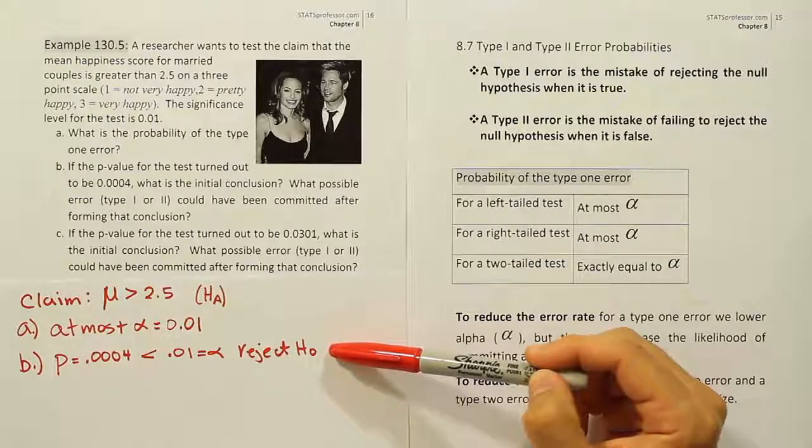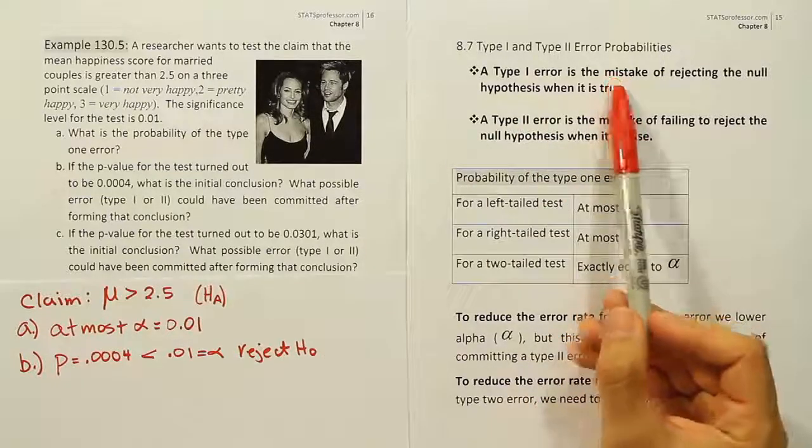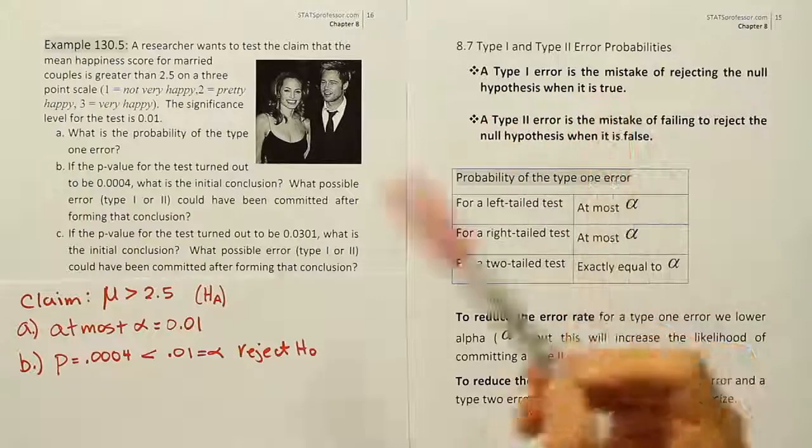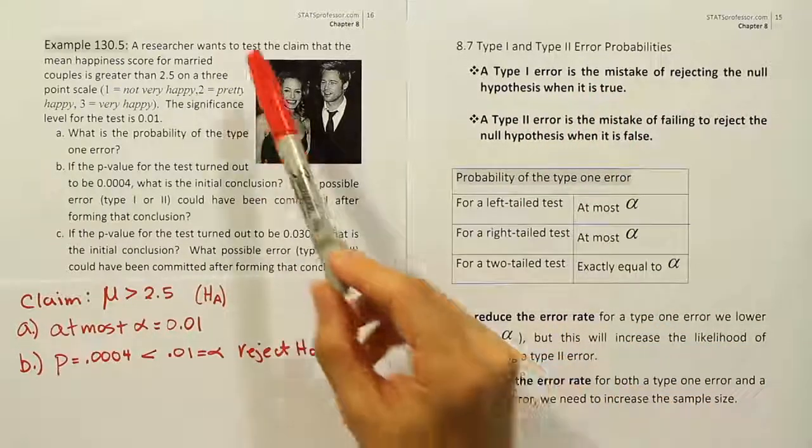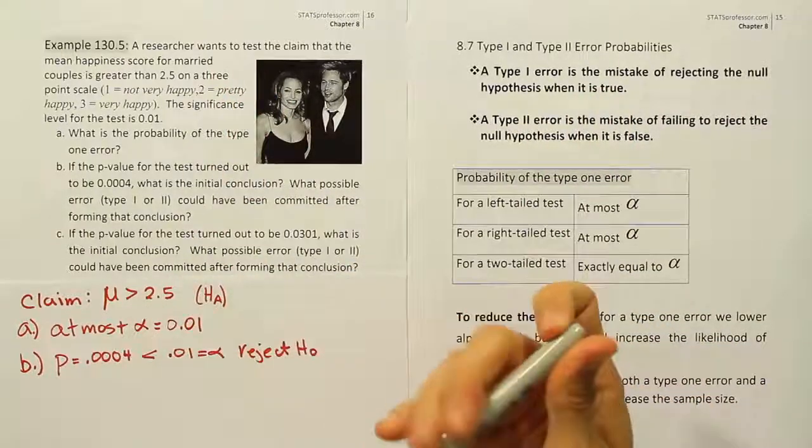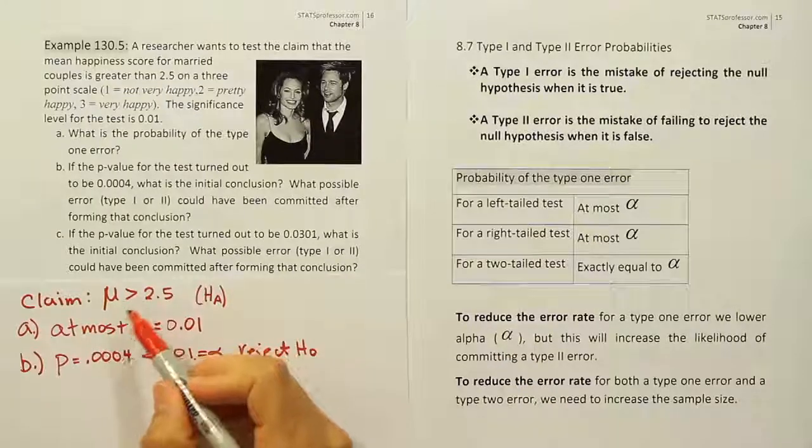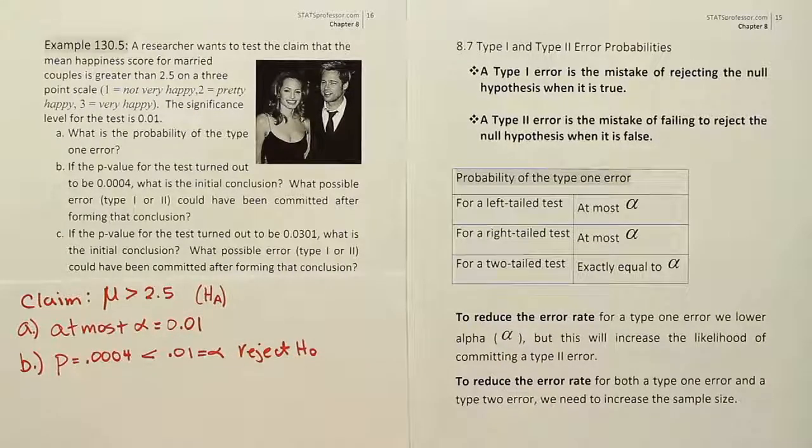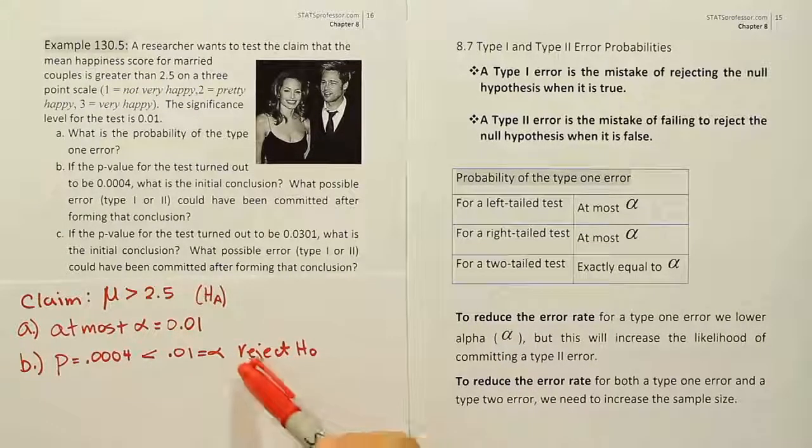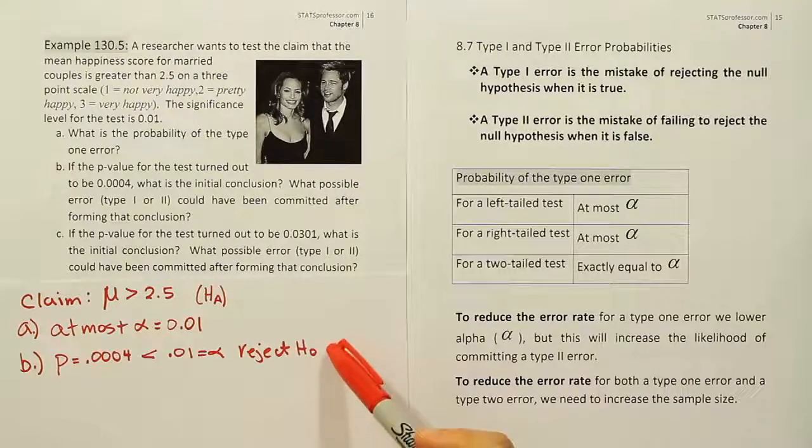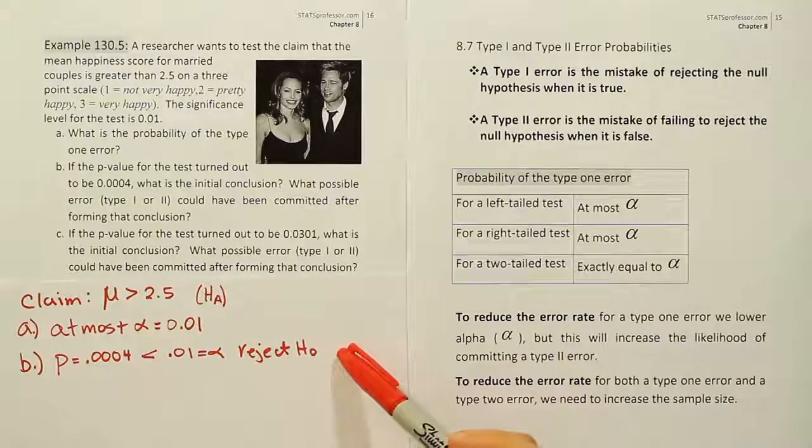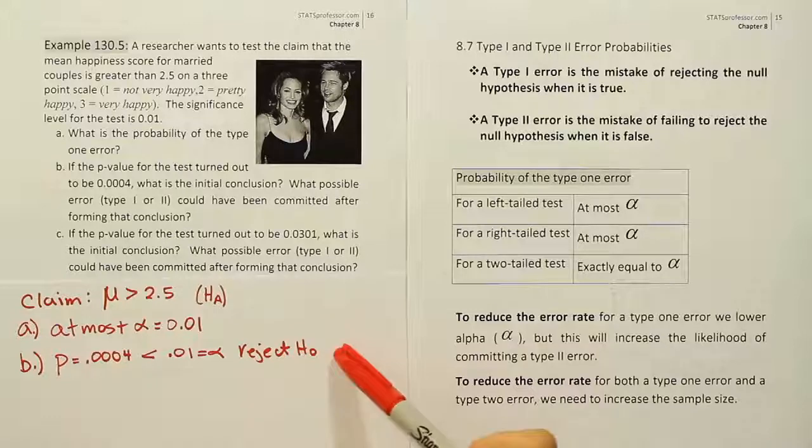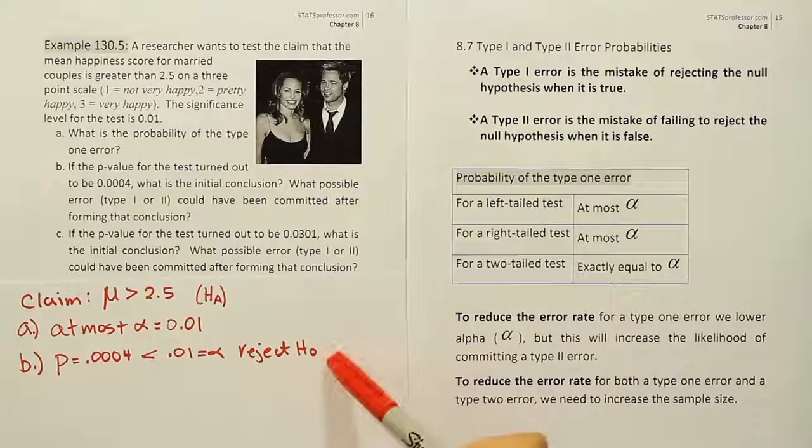So the only possible error we made was the error of rejecting a true null. So if it turns out that this null hypothesis, the null hypothesis here, of course, would be less than or equal to 2.5. If it turns out that the null hypothesis is true and we rejected it, then it would basically be a type 1 error. So in this case, our only possible error is the type 1 because we rejected the null.